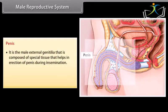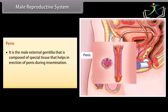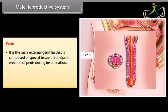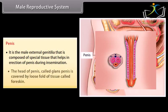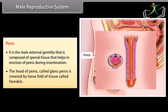The penis is the male external genitalia, composed of special tissue that helps in erection of the penis during insemination. The head of the penis, called the glans penis, is covered by a loose fold of tissue called the foreskin.